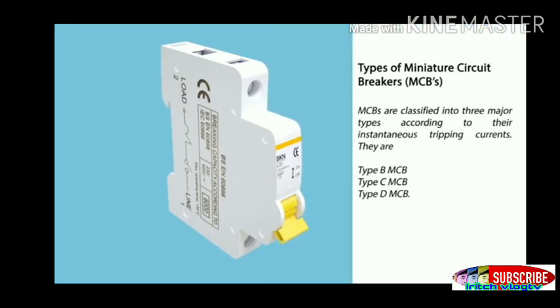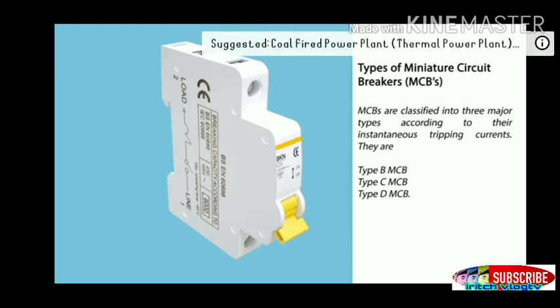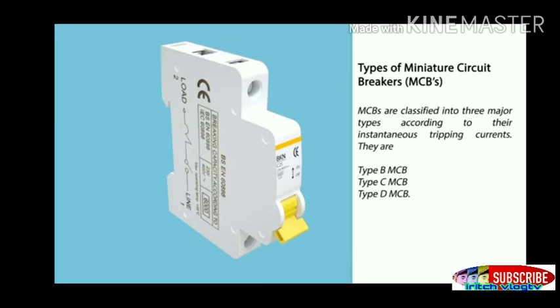Types of miniature circuit breakers: Miniature circuit breakers are classified into three major types according to their instantaneous tripping currents. They are Type B, Type C, and Type D.